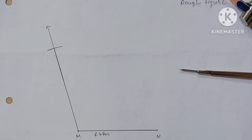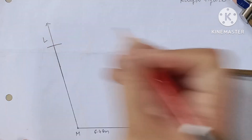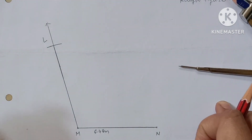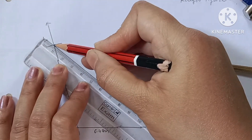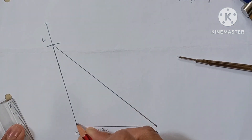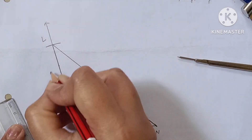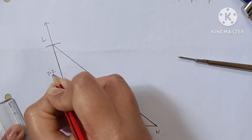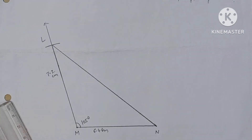This is your point L. Join L and N. The angle is 105 degrees and this distance is 7.2 centimeters. Now to construct the circumcircle, you bisect the sides.